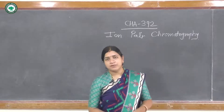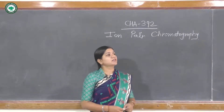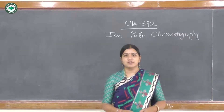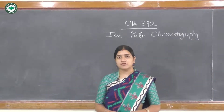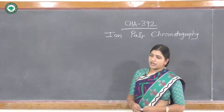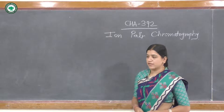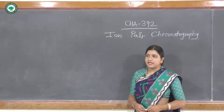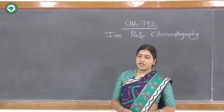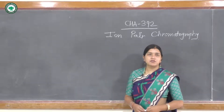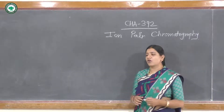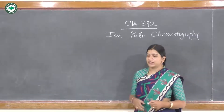In ion pair chromatography, the substances which cannot be analyzed by using ion exchange chromatography or reverse phase chromatography — for such substances, ion pair chromatography is employed. In this, there is a pairing between the analyte and the counter ion, so we use the combination of the analyte along with the counter ion.